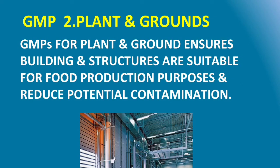GMP Component 2 is Plants and Grounds. Buildings and structures must be suitable for food production and designed to reduce potential contamination. The entire facility surroundings should be free of debris, roads should be clean, there should be no uncut grass, and adequate space for processing operations must be maintained to avoid cross-contamination.